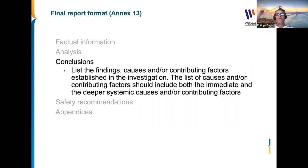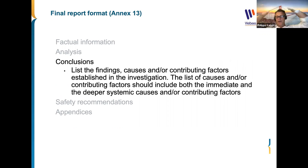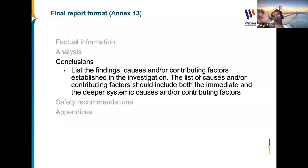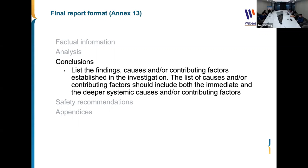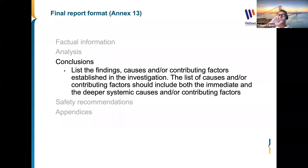The conclusion is a list of findings, causes, or contributing factors established in the investigation. The list of causes or contributing factors should include both immediate and deeper systemic causes. Everything starts from the accident, then human errors or violations, then antecedent factors — this sequence should be provided in your conclusion to explain the link between causes and consequences.